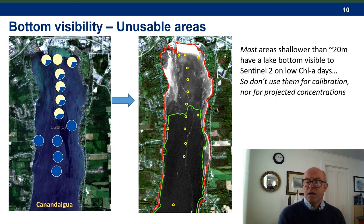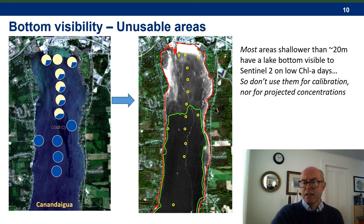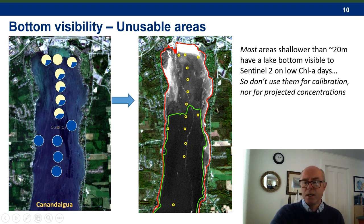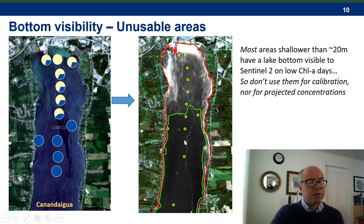This phenomenon limits the number of locations I could use for calibration of the model. Many sites in Canandaigua and Skinny Atlas Lakes had pixels which were dominated by the lake bottom, shown here on the left for Canandaigua Lake. These were all excluded from the analysis. The limit was around the 20 meters depth contour, shown here. This is also the area for which estimates of chlorophyll A are valid, in the center of the lake.